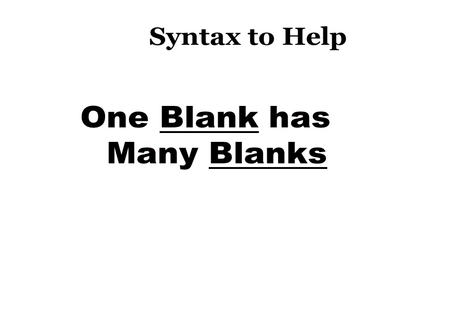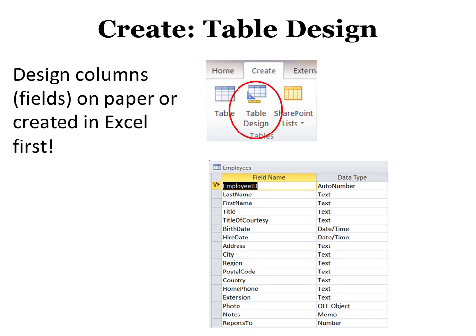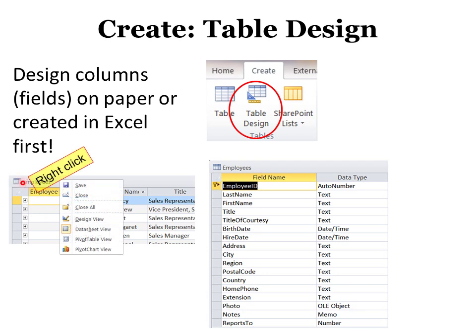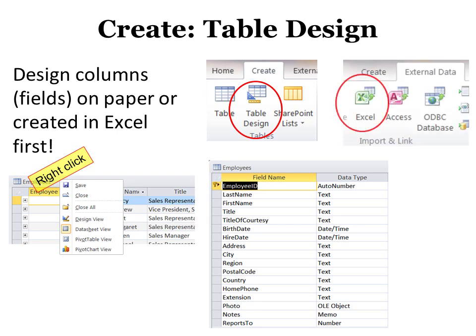We'll talk about relationships in a minute. If you're going to create your tables, I would suggest you design them on paper first or maybe make them in Excel first. If you've given it that week of think time, you can go right into Create Table Design and fill in the blanks for all the field names. This is what a table looks like in datasheet view versus design view. Simply right-click on the name of the table to go back and forth between the two. You'll design it in design view and do your data entry or view data in datasheet view. If your data is already in Excel, go to External Data.